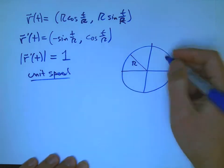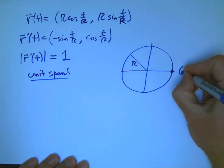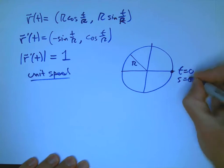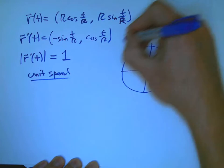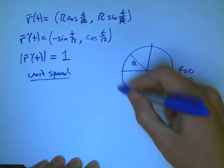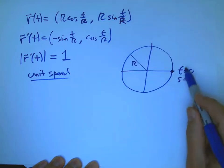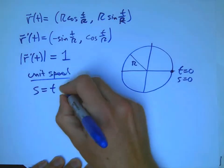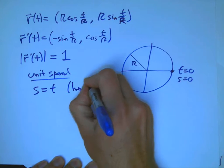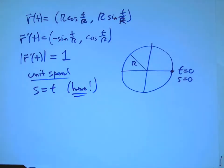What we've seen is that if we start here at t equals 0, well that's where our length so far function is 0. And as we go around the curve, then the length and the time value are going to be the same, they're going to be in sync. And so s is going to be equal to t for this unit speed curve, not always in general.